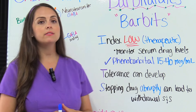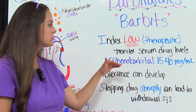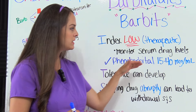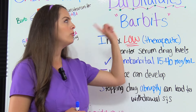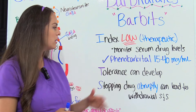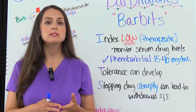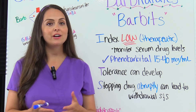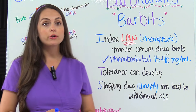I — index is low, specifically the therapeutic index. There is a fine line between the therapeutic dose and the toxic dose, so monitor serum drug levels. For phenobarbital, the therapeutic range is 15–40 micrograms per milliliter; anything greater can indicate toxicity. T — tolerance can develop, meaning the patient needs to increase the dose to get the same effect. With barbiturates, this can easily lead to accidental overdose and even death, especially with long-term use or drug abuse.